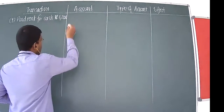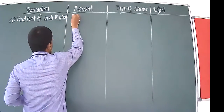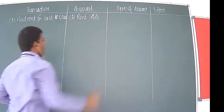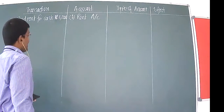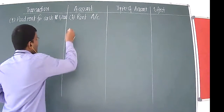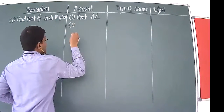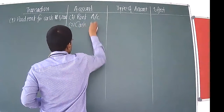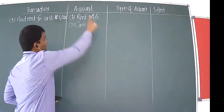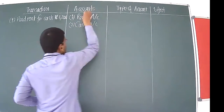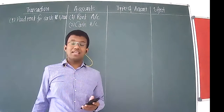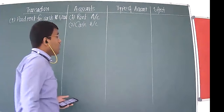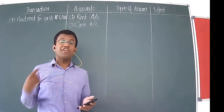Let's identify the two accounts. The first account is rent account, because you are paying rent. The second account involved is cash account. So we have identified the two accounts — rent account and cash account. Now let's identify what types of accounts these are.